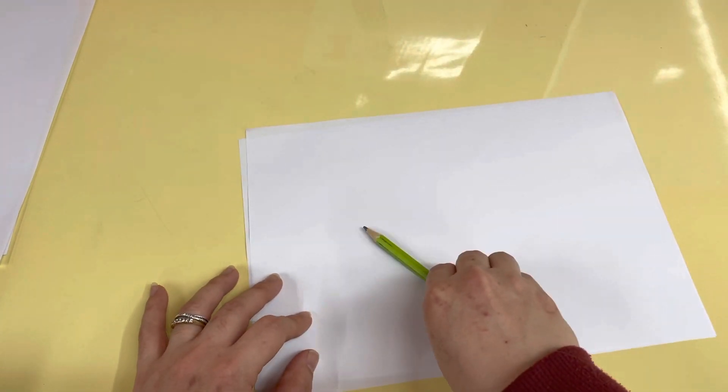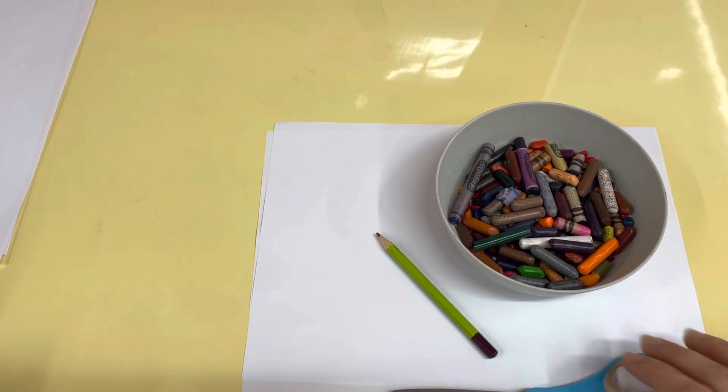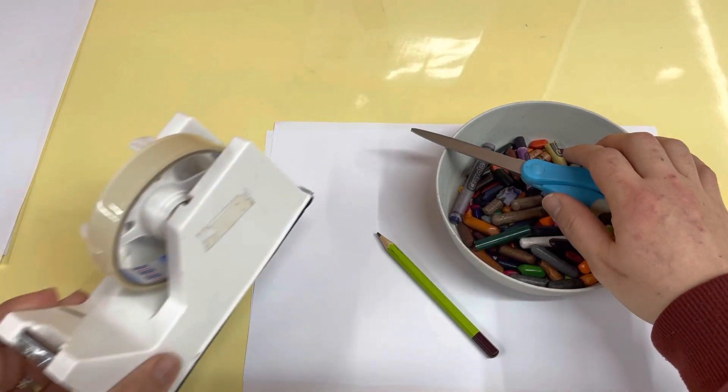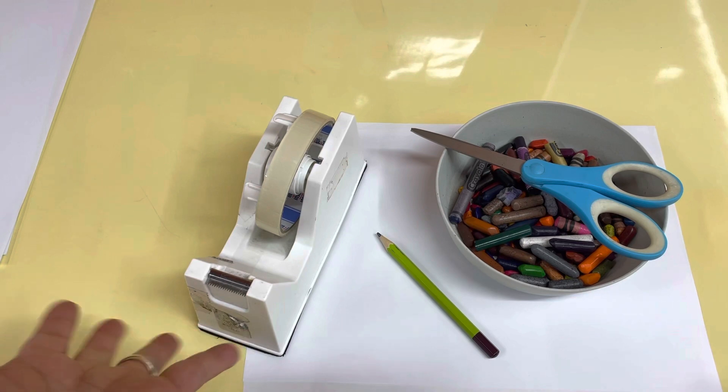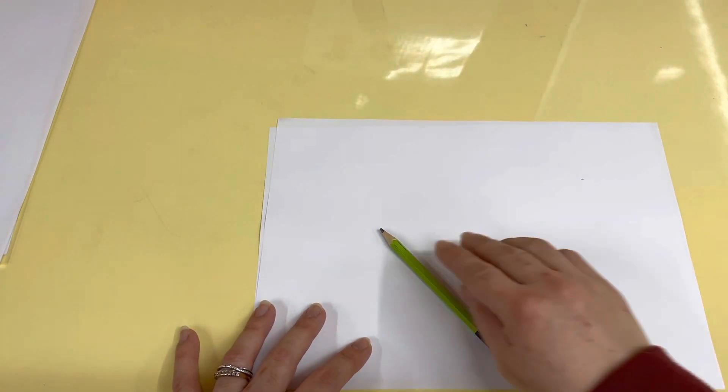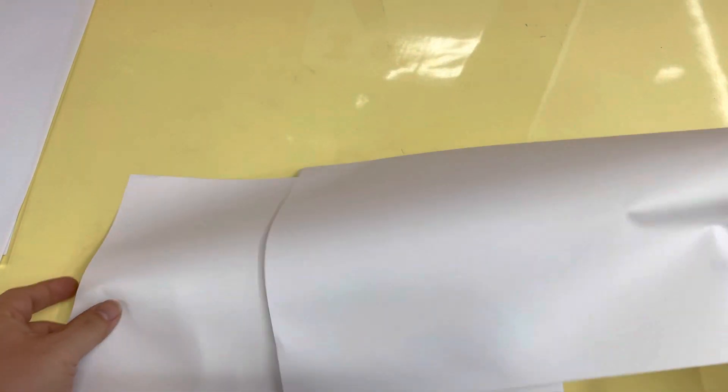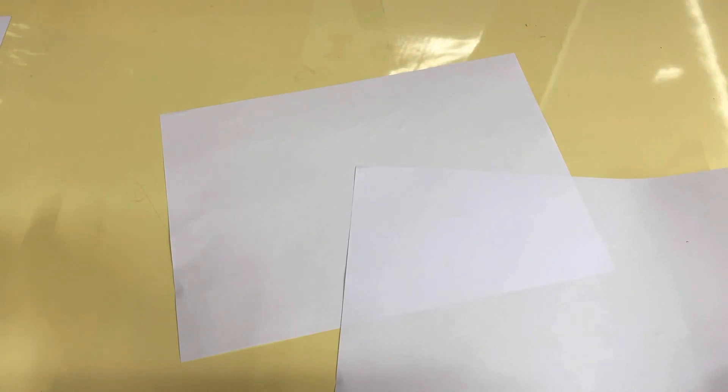And pencil, your crayons, scissors and tape. Okay, so step one. Step one, you fold one paper. Put this away so you don't get confused.